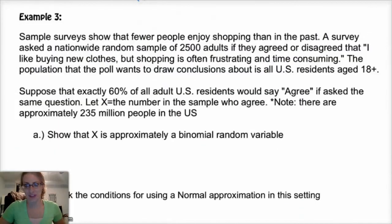Alright, so let's try this one last example. So, sample surveys show that fewer people enjoy shopping than in the past. A survey asked a nationwide sample of 2,500 adults if they agreed or disagreed that I like buying new clothes, but shopping's often frustrating and time-consuming. Population at the poll wants to draw conclusions. Okay, blah, blah, blah. Suppose 60% of the residents would say agree if asked the same question. So, this is talking about the population. So the true population proportion of agreeing is 60%. X is the number in the sample who agree. And so, there are approximately 235 million people in the U.S. Okay, so A asks to show that X is approximately a binomial random variable.